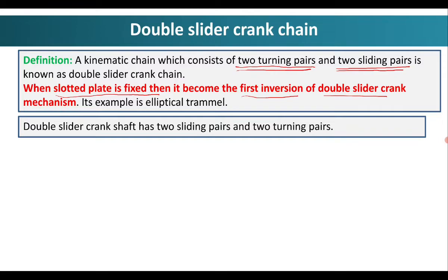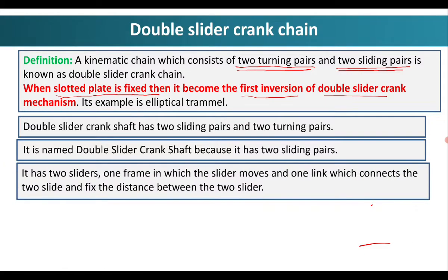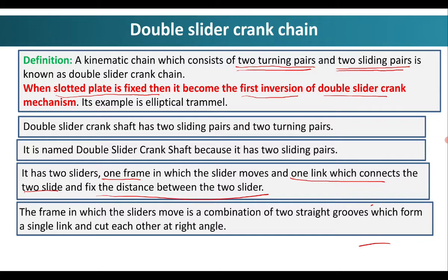The double slider crank chain has two sliding pairs and two turning pairs. It has two sliders, one frame in which the sliders move, and one link which connects the two sliders and fixes the distance between them. The frame in which the slider moves is a combination of two straight grooves which form a single link and cut each other at right angles.